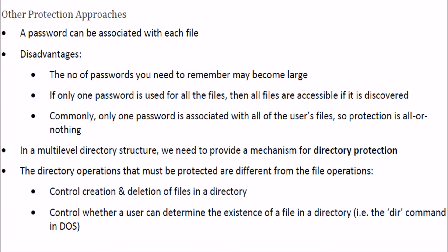There are other protection approaches as well. A password can be associated with each file, which is one intuitive form of protection. However, the disadvantage is that the number of passwords to remember can be very large. If only one password is used for all files, it can be easily discovered by anyone. So all files become accessible if that one password is known, meaning protection is all or nothing.